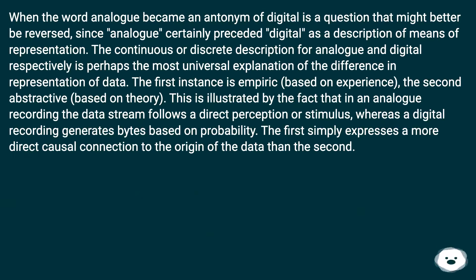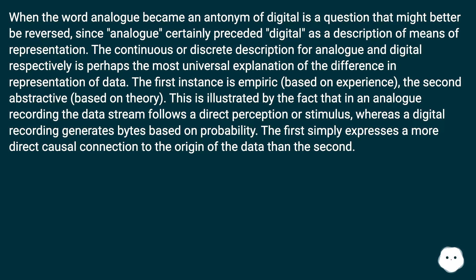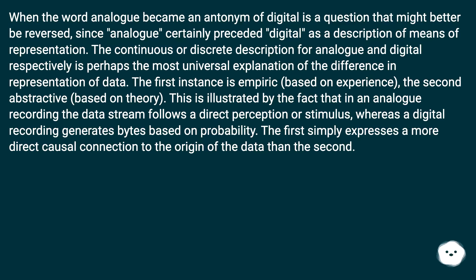The continuous or discrete description for analog and digital respectively is perhaps the most universal explanation of the difference in representation of data. The first is empiric — based on experience — the second abstractive — based on theory. In an analog recording the data stream follows a direct perception or stimulus, whereas a digital recording generates bytes based on probability. The first simply expresses a more direct causal connection to the origin of the data than the second.